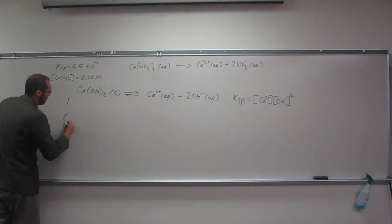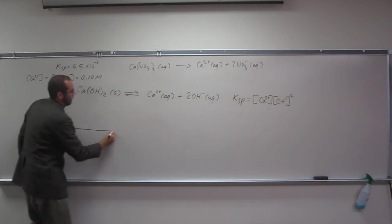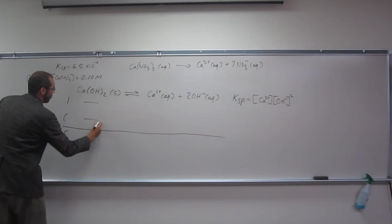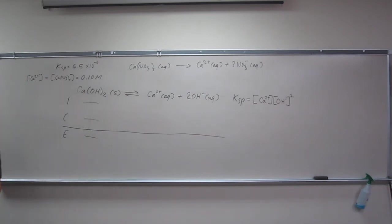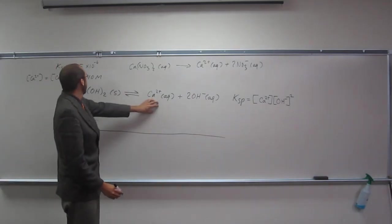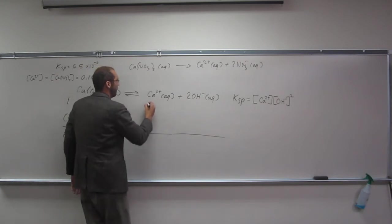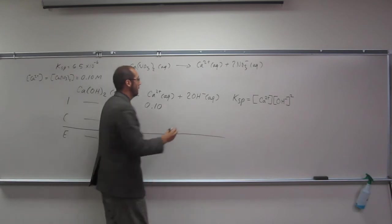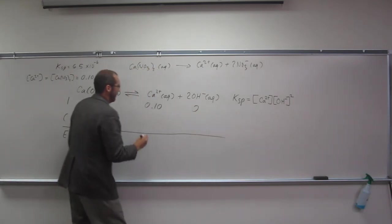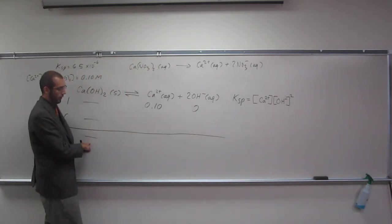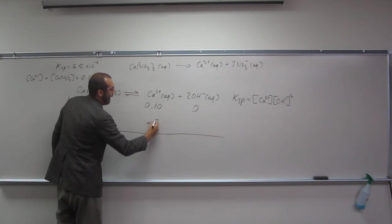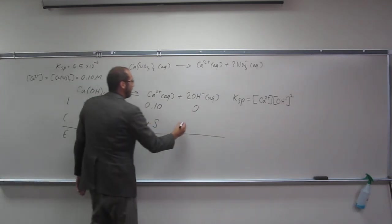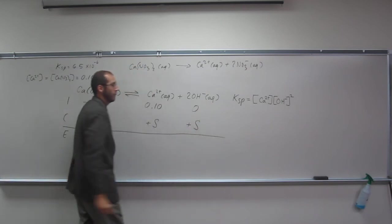Let's do an ice table. So here, we're going to put 0.10 molar. Here, nothing. Here. So nothing here but plus S, remember, for solubility, and plus S for solubility.